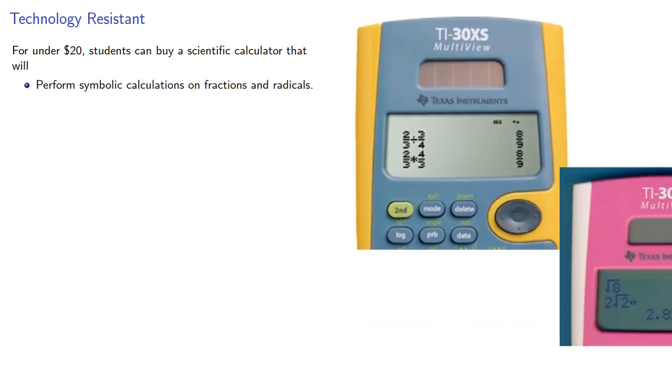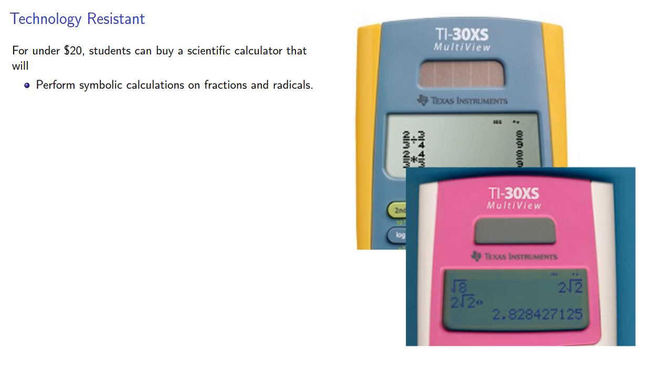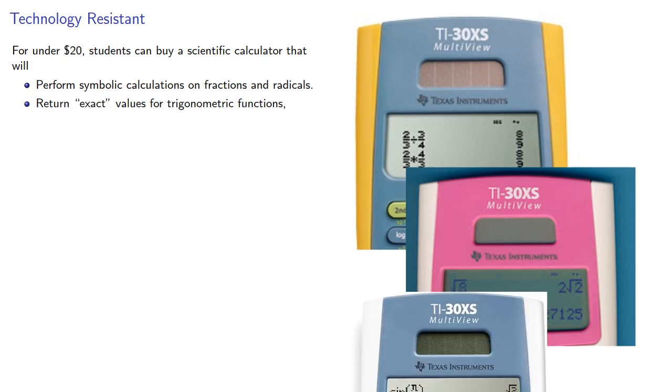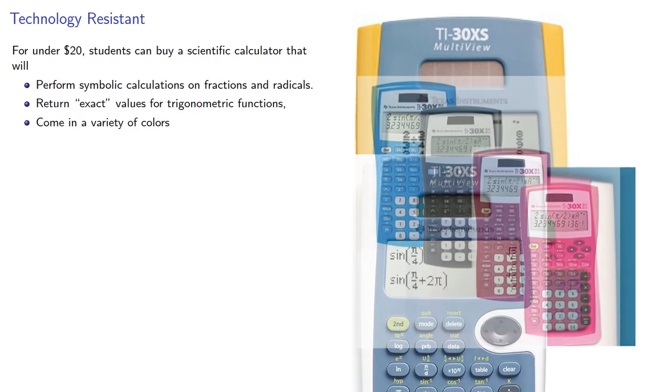But we can at least make it technology resistant. Making our classes technology resistant is going to require knowing what the state of the art is. For under $20, students can buy a scientific calculator that will perform symbolic calculations on fractions and radicals, return exact values for trigonometric functions, and come in a variety of colors.